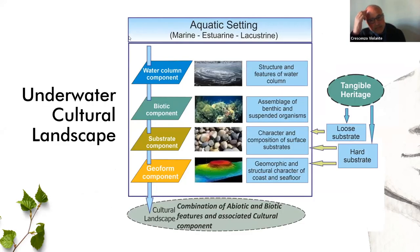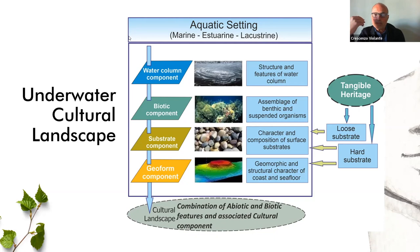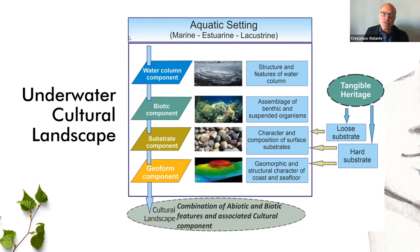Going into more detail, the main components of the marine environment include the water column, the seafloor substrate composition, the biological communities, and the geomorphological features. We can also include the underwater cultural features — the tangible heritage — in the substrate and geoform component, as they affect both the morphological and compositional character of the seafloor.